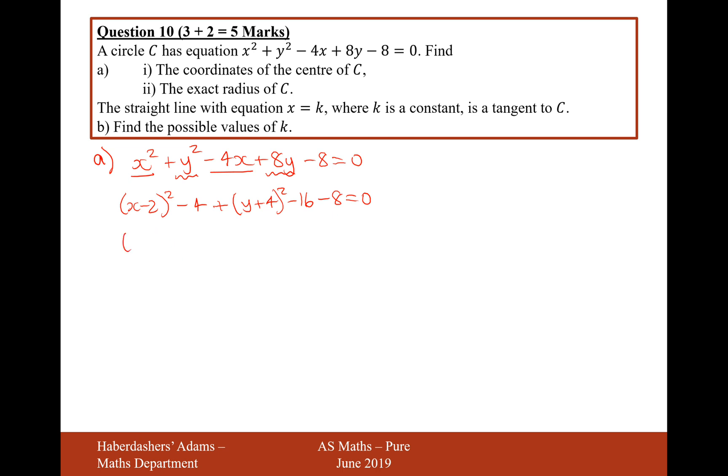Now let's move all three of those separate numbers onto the other side. So it's going to be x minus 2 squared plus y plus 4 squared equals 28. Therefore the center is going to be 2, minus 4 with a radius of 2 root 7. That's root 28, the square root of the 28 on the right hand side there.